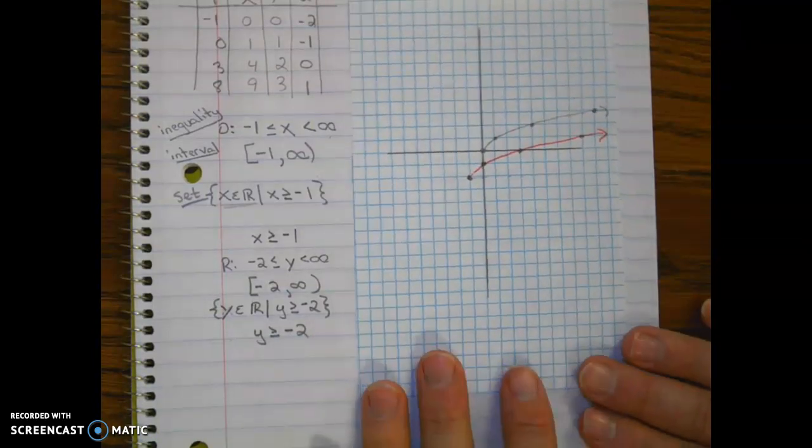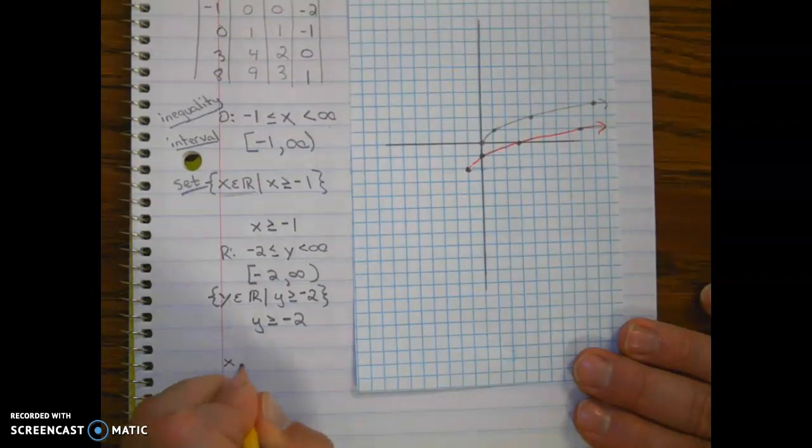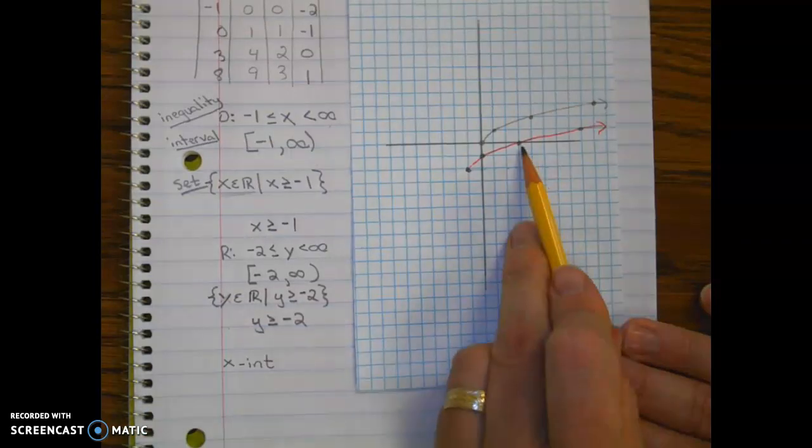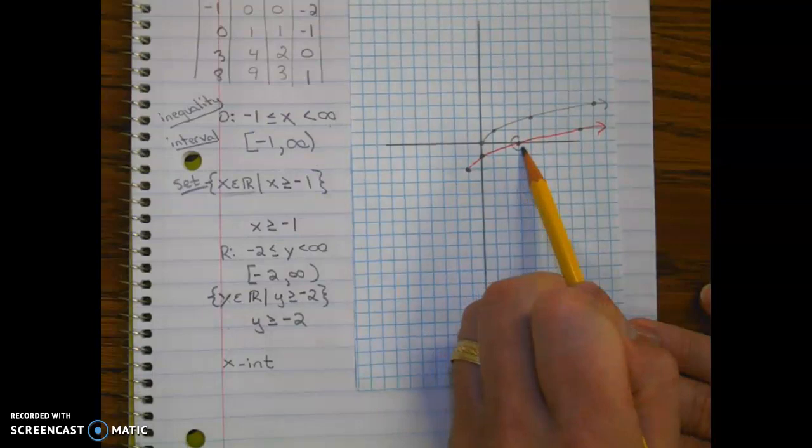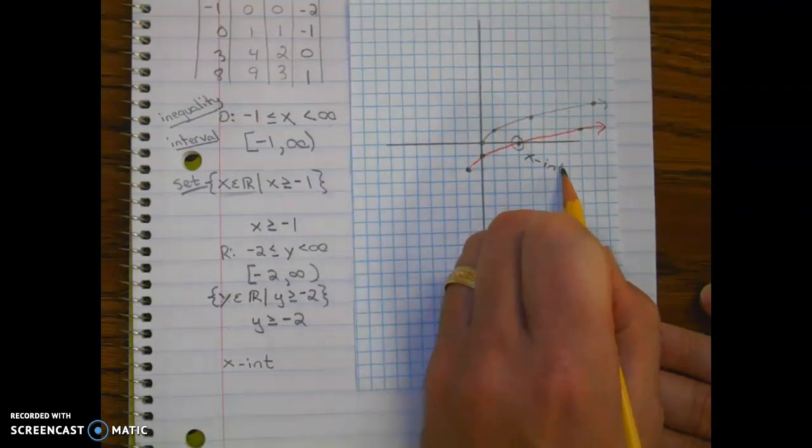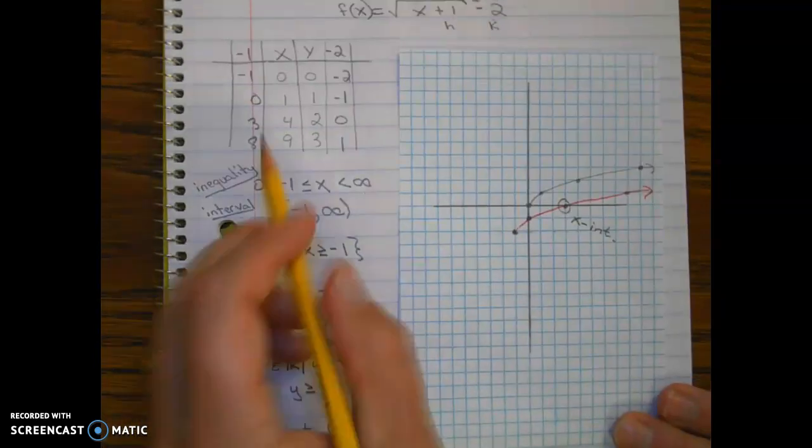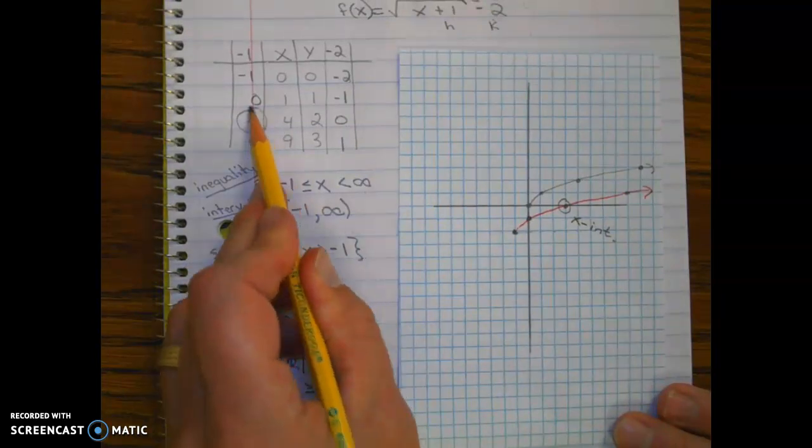So those are two key features. Next, let's take a look at the x and the y intercept. So the x intercept we can easily see that here, here at three zero. Or we could look in the table and find the x intercept here.